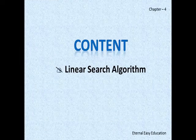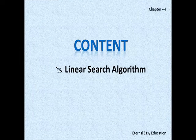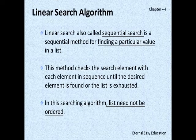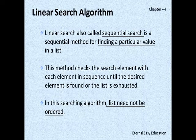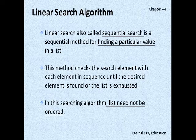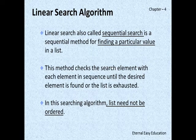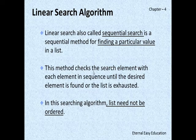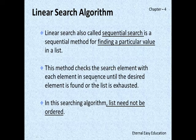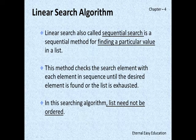Content: Linear Search Algorithm. So what is the linear search algorithm? It's also called sequential search, a sequential method for finding a particular value in a list. This method checks the search element with each element in sequence until the desired element is found or the list is exhausted.